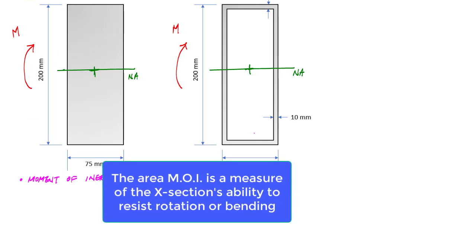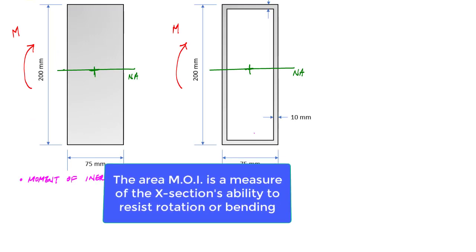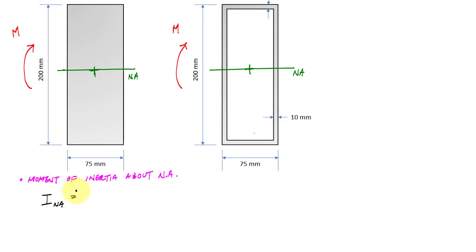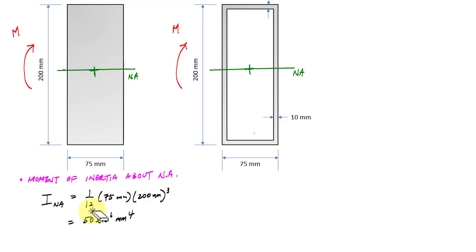For the solid rectangular cross section, it's just a rectangle. Using the popular formula from statics — one-twelfth base times height cubed — this gives us 50 million millimeters to the fourth.